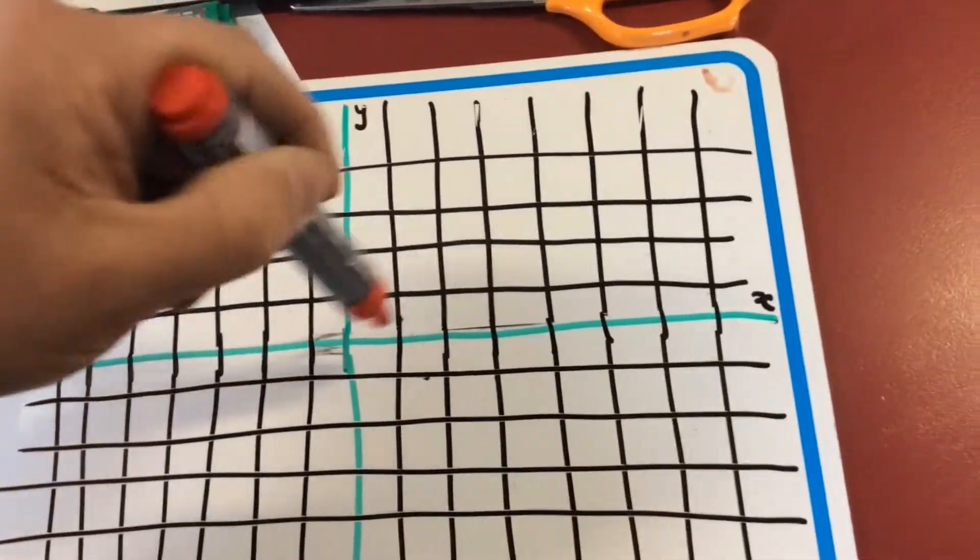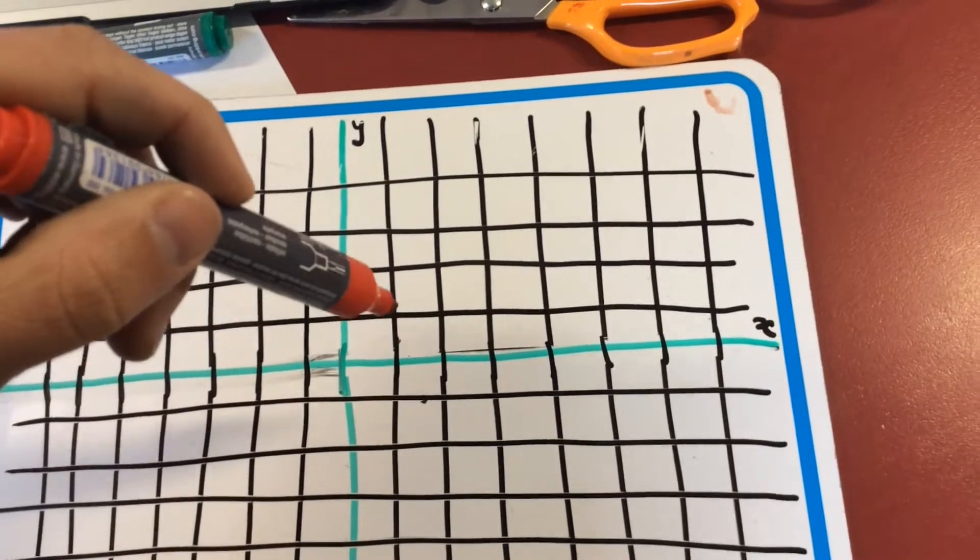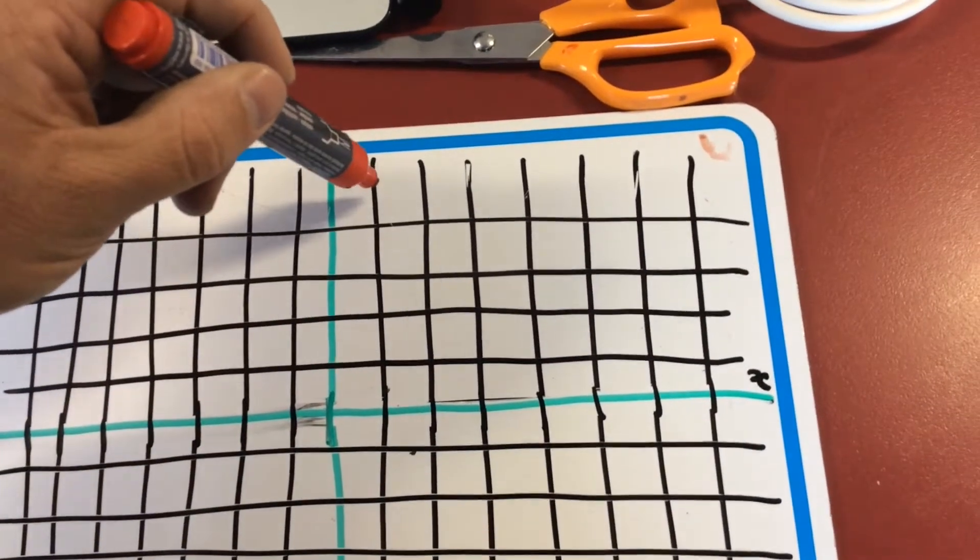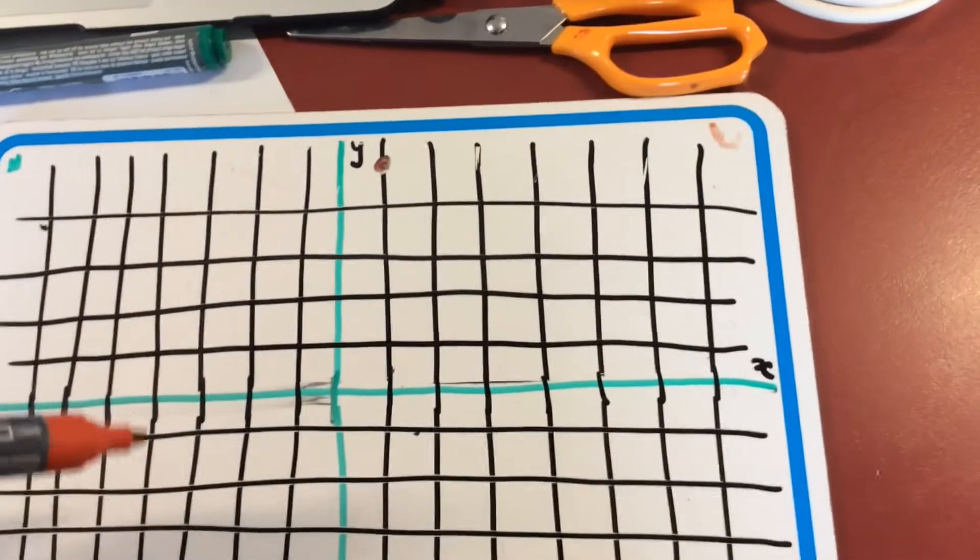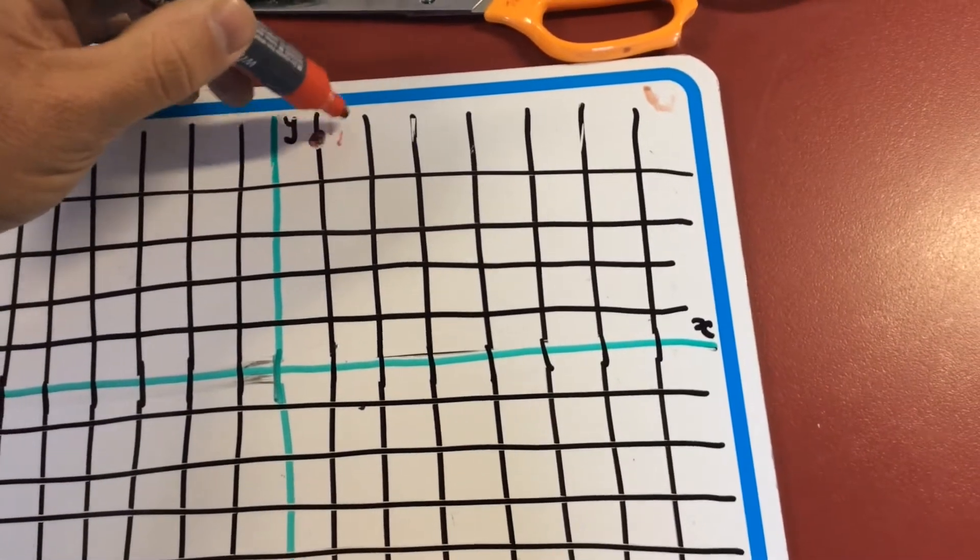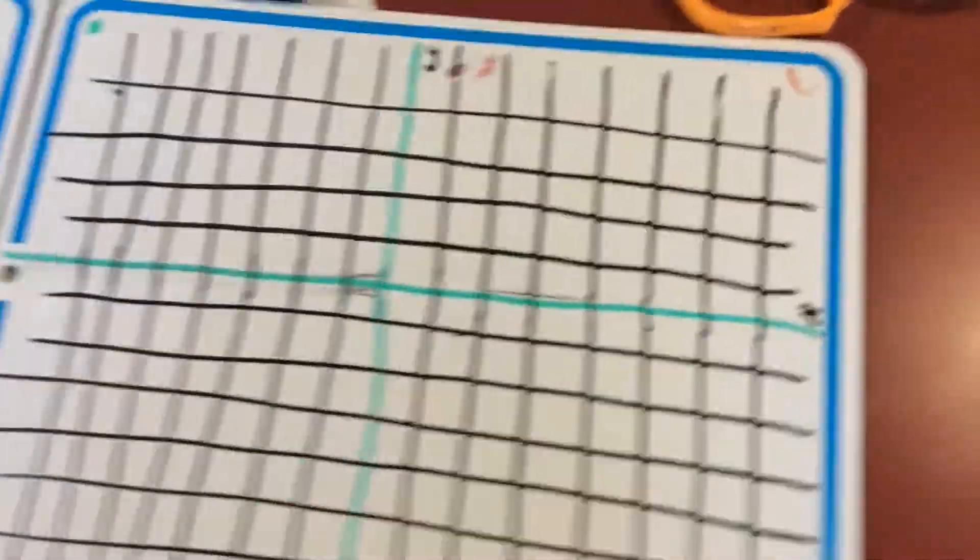I go one across and then I'm going five up: one, two, three, four - oh I don't even have a line there - five. So I put that dot right there. So that coordinate would then be written as (1,5).